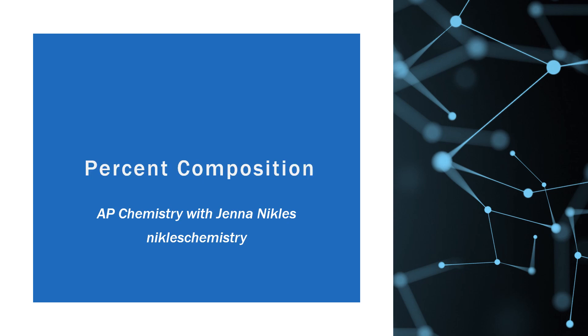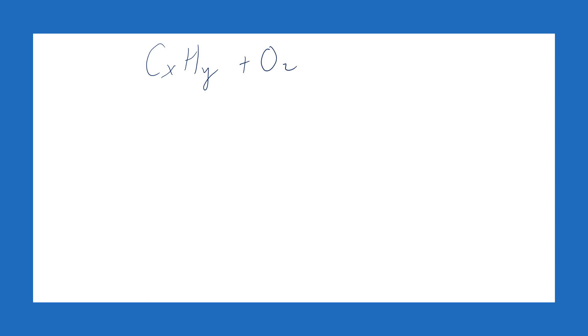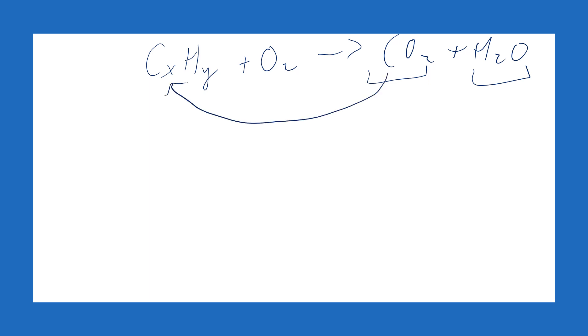The first type of lab you might see is percent composition. Percent composition or combustion analysis are frequently asked. You might have to do an experiment where you have a hydrocarbon, CxHy, and you're combusting it — reacting with oxygen in the air, burning it — and it will form carbon dioxide and water. If you have a tool that can measure the amount of carbon dioxide and water produced, you can work backwards to find the carbon and hydrogen, since all the carbon winds up in CO2 and all the hydrogen winds up in water.